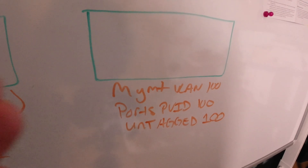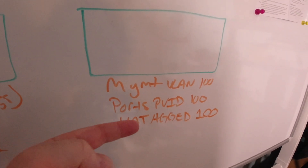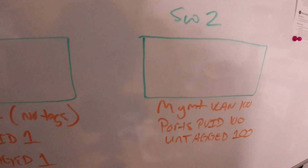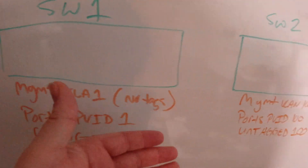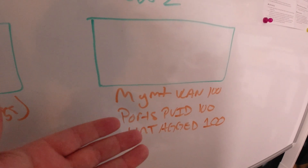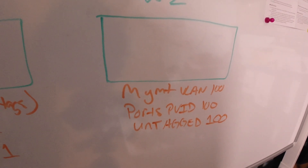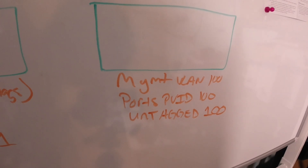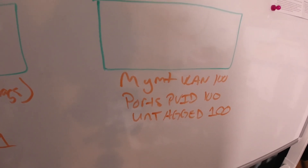So what I've done by doing all the PVID and the untagged is basically replicated this, just with a different VLAN. Sometimes in network design, you don't necessarily want to try to be too clever.